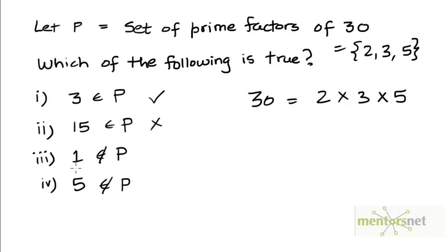1 is also not a prime number. So 1 does not belong to the set P. And so this statement is true. 5 is a prime factor of 30. So 5 does belong to the set P. And so this statement is false.